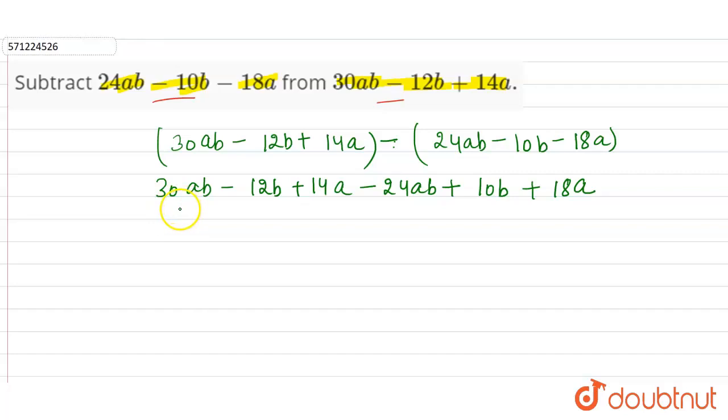Now like terms means which have same algebraic factor. So 30ab and 24ab have same algebraic factor, that is ab. Similarly, minus 12b and plus 10b have the same algebraic factor, that is b. So these are two like terms.